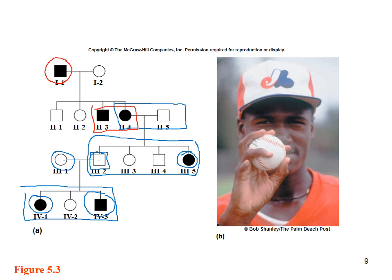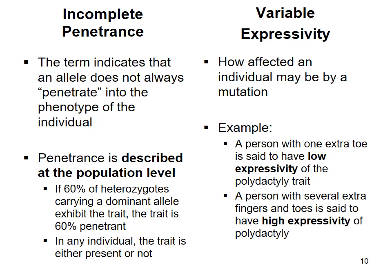How do we explain the mutation skipping the son but affecting the grandkids? For that, we look at incomplete penetrance and variable expressivity. Incomplete penetrance basically means that just because you inherit the allele or mutation doesn't mean it will always penetrate or make its way through to the phenotype. Just because the son inherited the mutation from his father doesn't mean he actually showed it in his phenotype — he almost became a carrier, passing the gene on to his offspring.